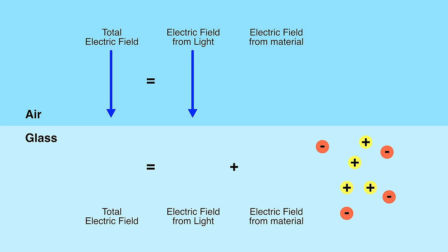You start out with glass with no electric field in it. The glass has charges in it, but they're arranged in a random way. But when you send light in, you impose an electric field on it. That field makes the charges move around, which sets up a counterbalancing electric field from the charges.